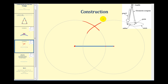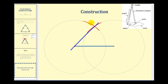Then we'll make segments from the intersection of the two arcs to the two end points of the segment. That'll be our isosceles triangle — there's one side and there's the other. Again, these two sides here would be congruent, and therefore we have an isosceles triangle.